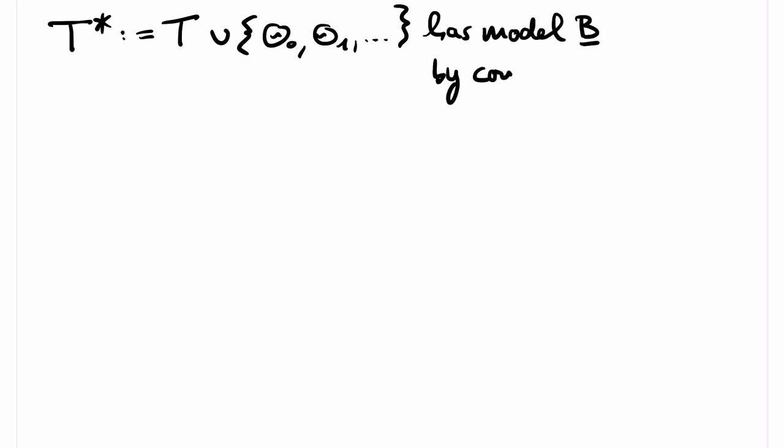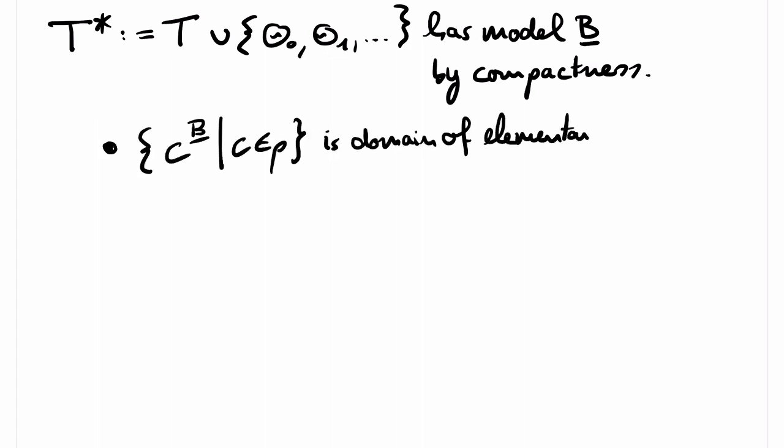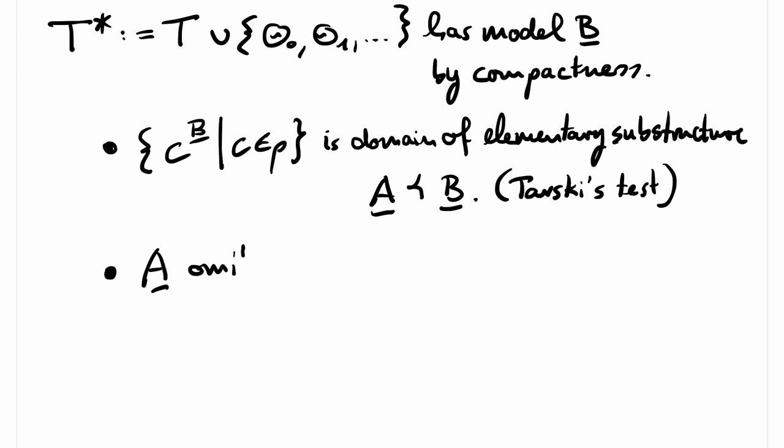The elements denoted by the constant symbols from rho are the domain of an elementary substructure A of B by Tarski's test, because we have forced all the necessary witnesses into our model in the odd steps of the construction. Finally, A omits P because we have eliminated all candidates of n-tuples that could realize P in the even steps of the construction. This finishes the proof.